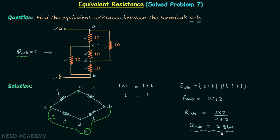The shortcut is: whenever we have a bridge in which all 4 resistors have the same value, the equivalent resistance will also have that same value. So remember this trick.